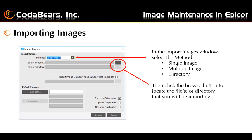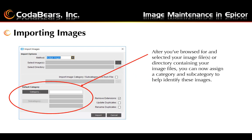The little box with the three dots you can click on to browse out and find either the directory, the image, or the multiple images you will be selecting. After you've browsed and selected your image files or directory containing your image files, you now want to assign your category and subcategory. These are used to help identify these images for search purposes.